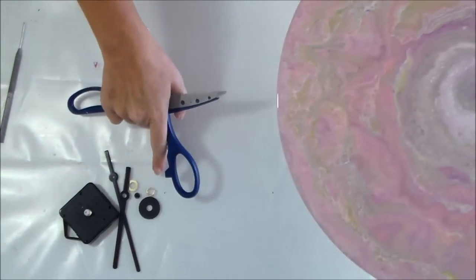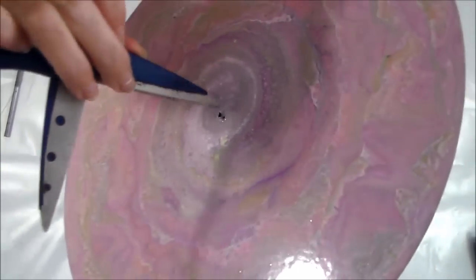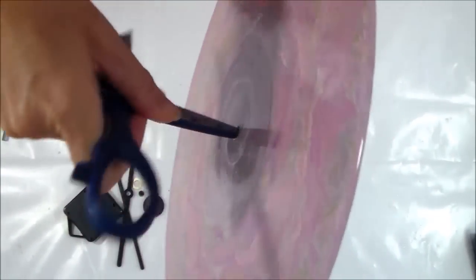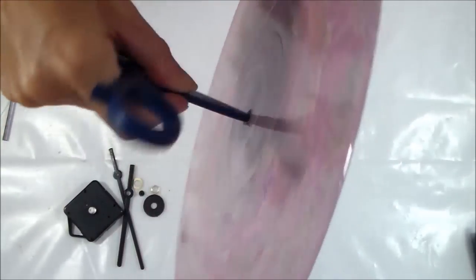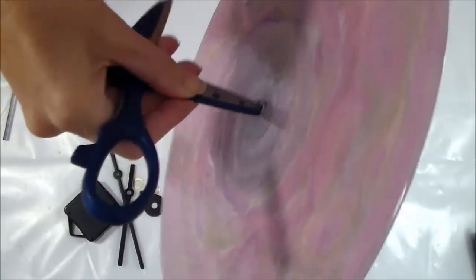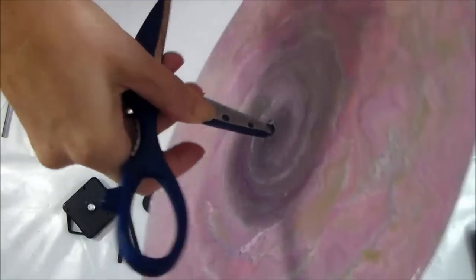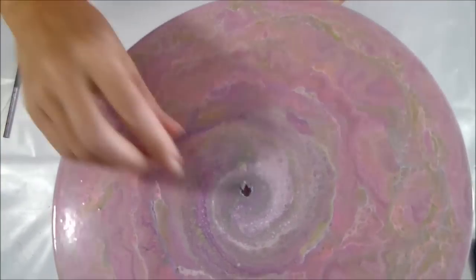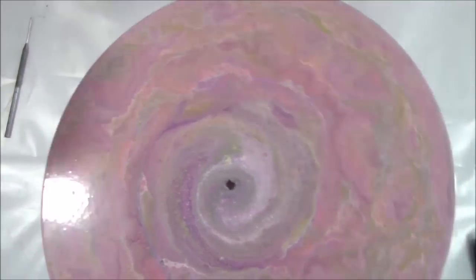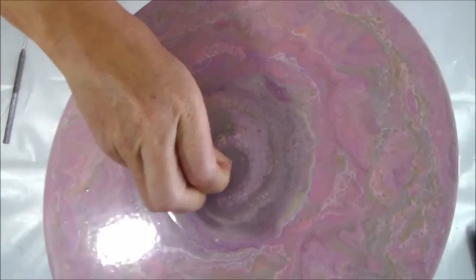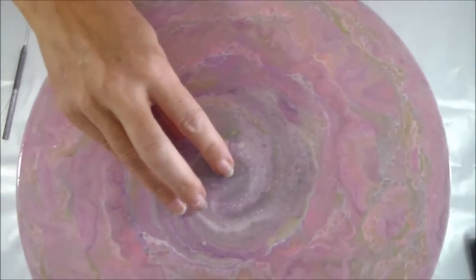So just gently be careful not to make too much of a mess. Now your clock parts can cover up any slight mess that you make in the middle there. But I'm just gently going round in a circle with my scissors just to open the hole out a little bit. And I'm just going to pick off those little bits of paint and try and make it as neat as possible.